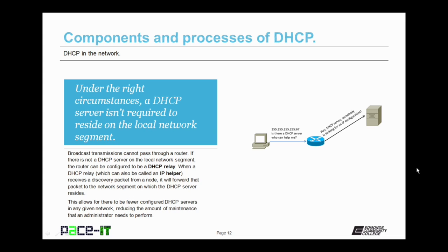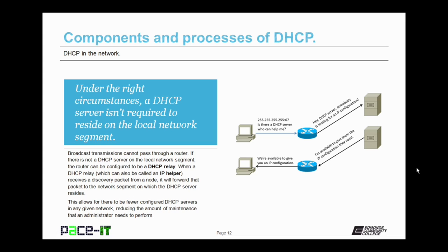A DHCP relay, also called an IP helper, receives a discovery packet from a node and forwards that packet to the network segment on which the DHCP server resides. This allows for fewer configured DHCP servers in any given network, reducing the amount of maintenance that an administrator needs to perform.